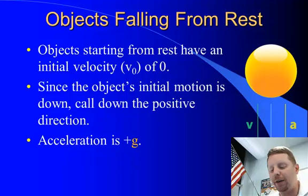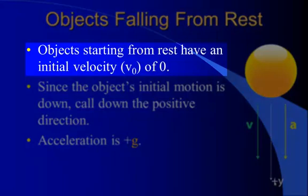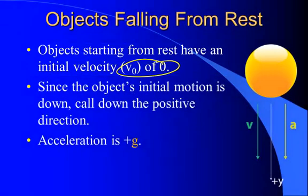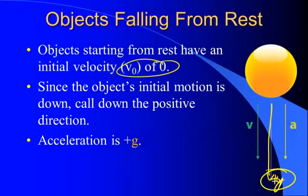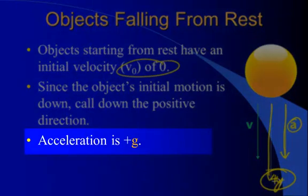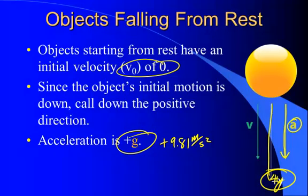We'll start off by talking about objects that are falling from rest. Anything that we drop, or that falls from rest, has an initial velocity v₀ of zero. When we talked about the kinematic equations, we said we're going to call the direction of an object's initial motion positive. So for an object dropped from rest, since it's initially moving downwards, we'll call that the positive direction. Then we also realize that the acceleration, which is down toward the center of the Earth, points in the same direction as our positive axis. Since they point in the same direction, our acceleration is going to be positive g, or positive 9.81 meters per second squared. Other than that, it's just a standard kinematics problem.